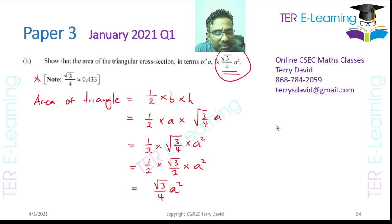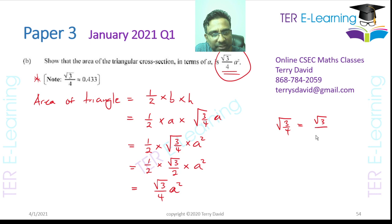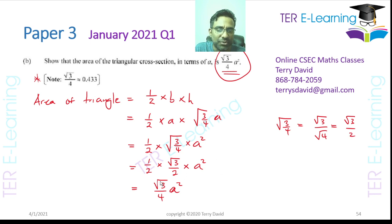For those unsure of that step: √(3/4) = √3 / √4 = √3 / 2. That's how we converted √(3/4) into √3/2 to arrive at the final expression √3/4 · e².